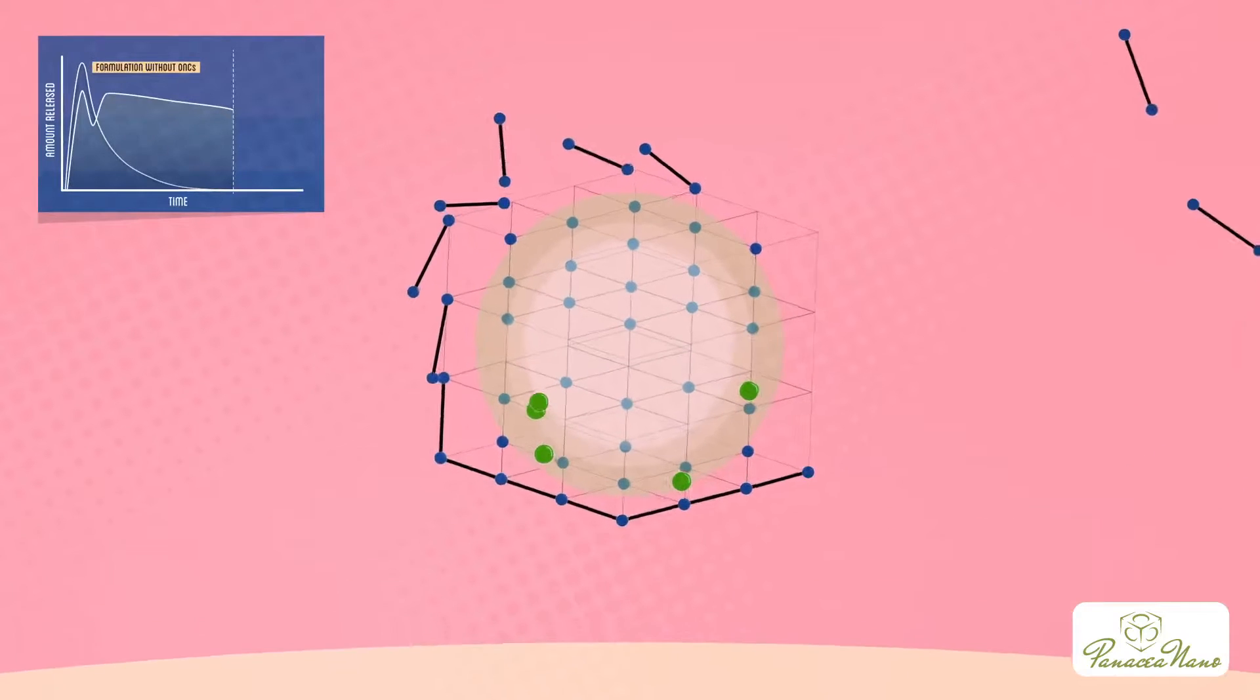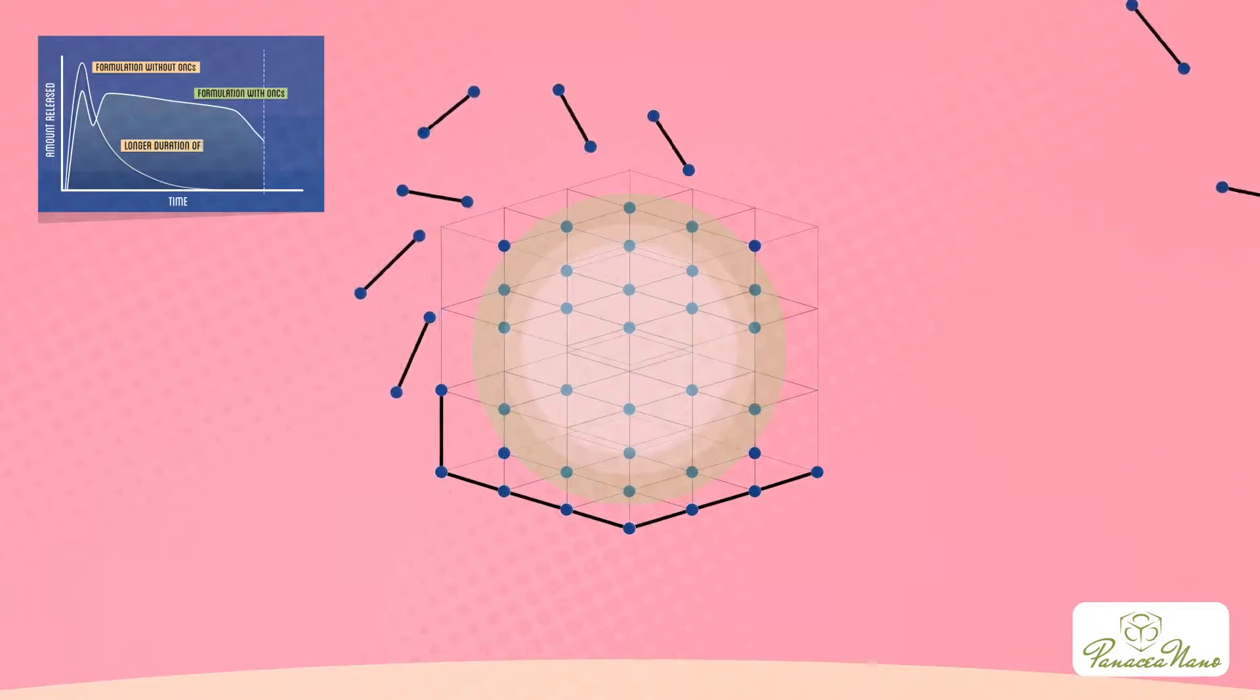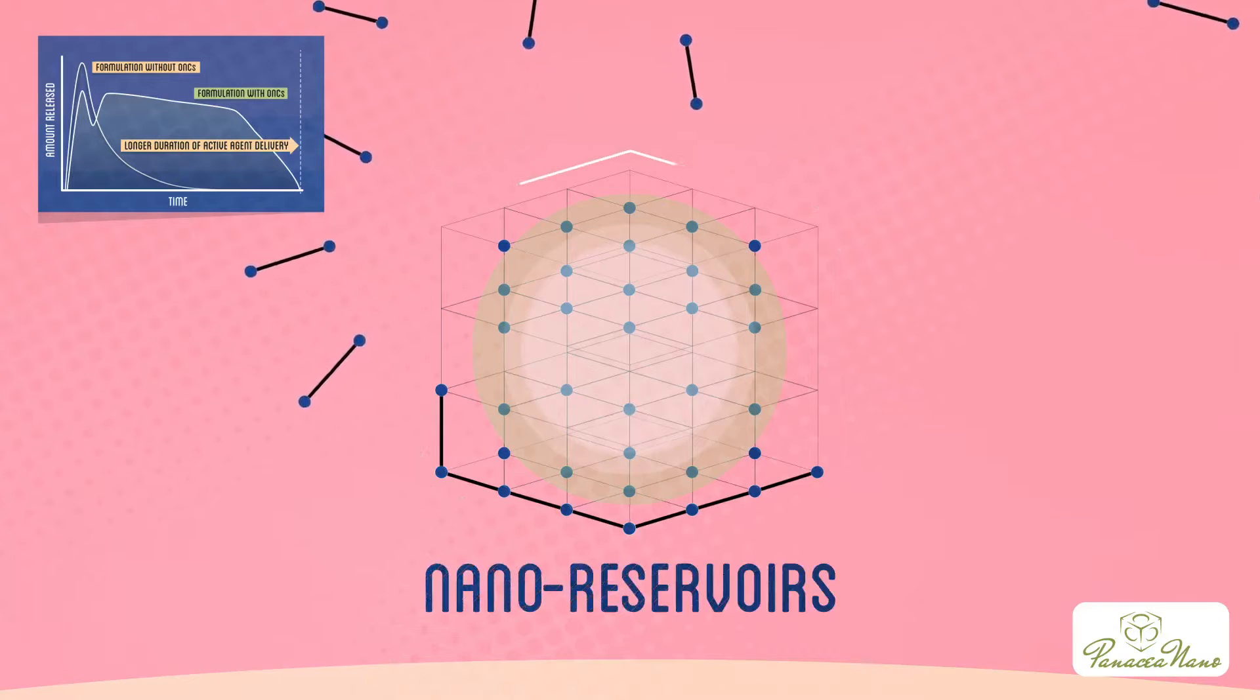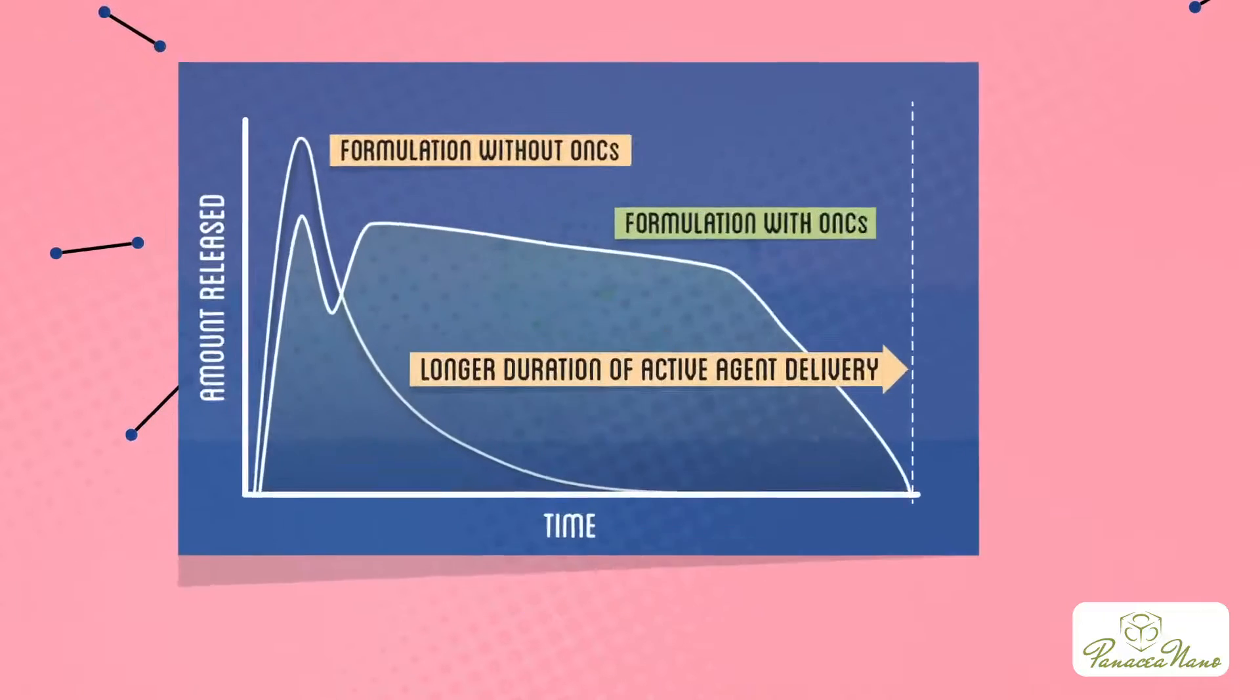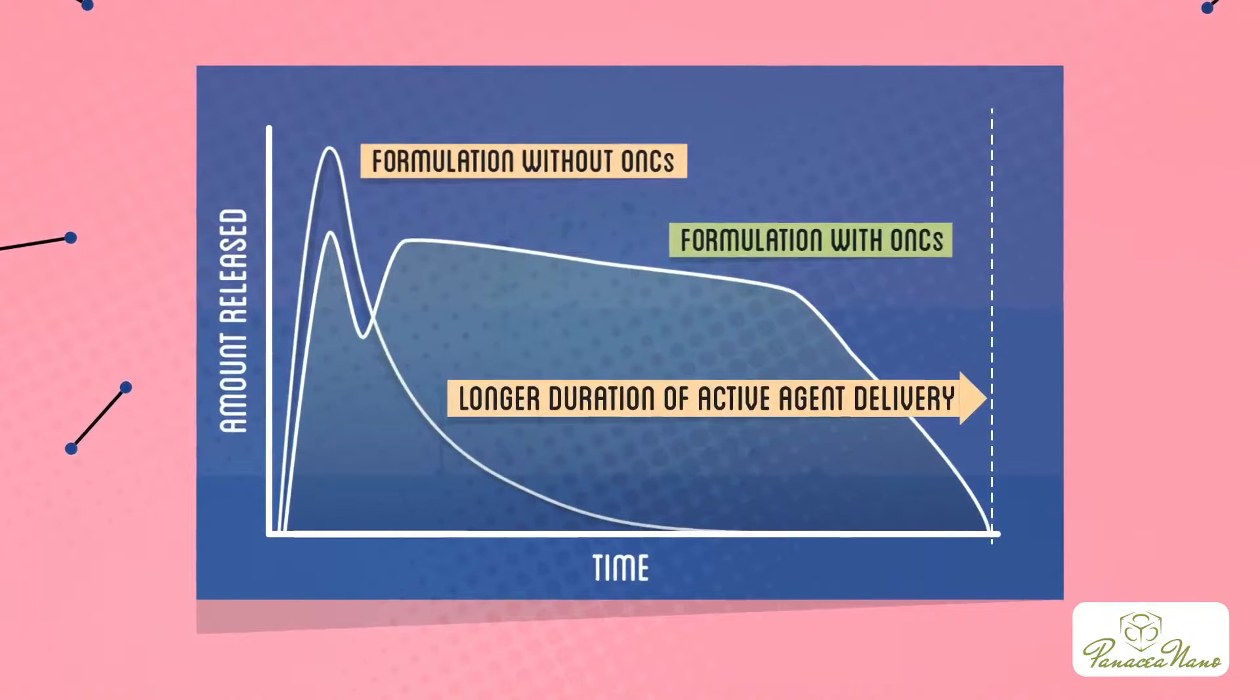Eventually, the ONC storage will be depleted and the release of agents reduces. ONCs act as nano-reservoirs that store a supply of agents that are constantly replenishing the number of free agents. ONCs can be optimized to store the agents for a predefined dosage level and release profile.